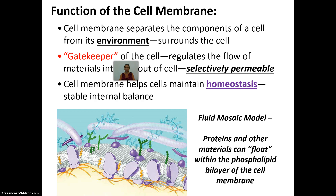The cell membrane separates the components of a cell from the inside to the outside environment. That is why we call it the gatekeeper of the cell — it controls what goes in and out. The cell membrane is semi-permeable: semi meaning somewhat, permeable meaning it allows things to pass through. So only certain things are allowed through, ensuring good things come in and bad things go out. The cell membrane's job is therefore to maintain homeostasis — that stable internal balance — within the cell.